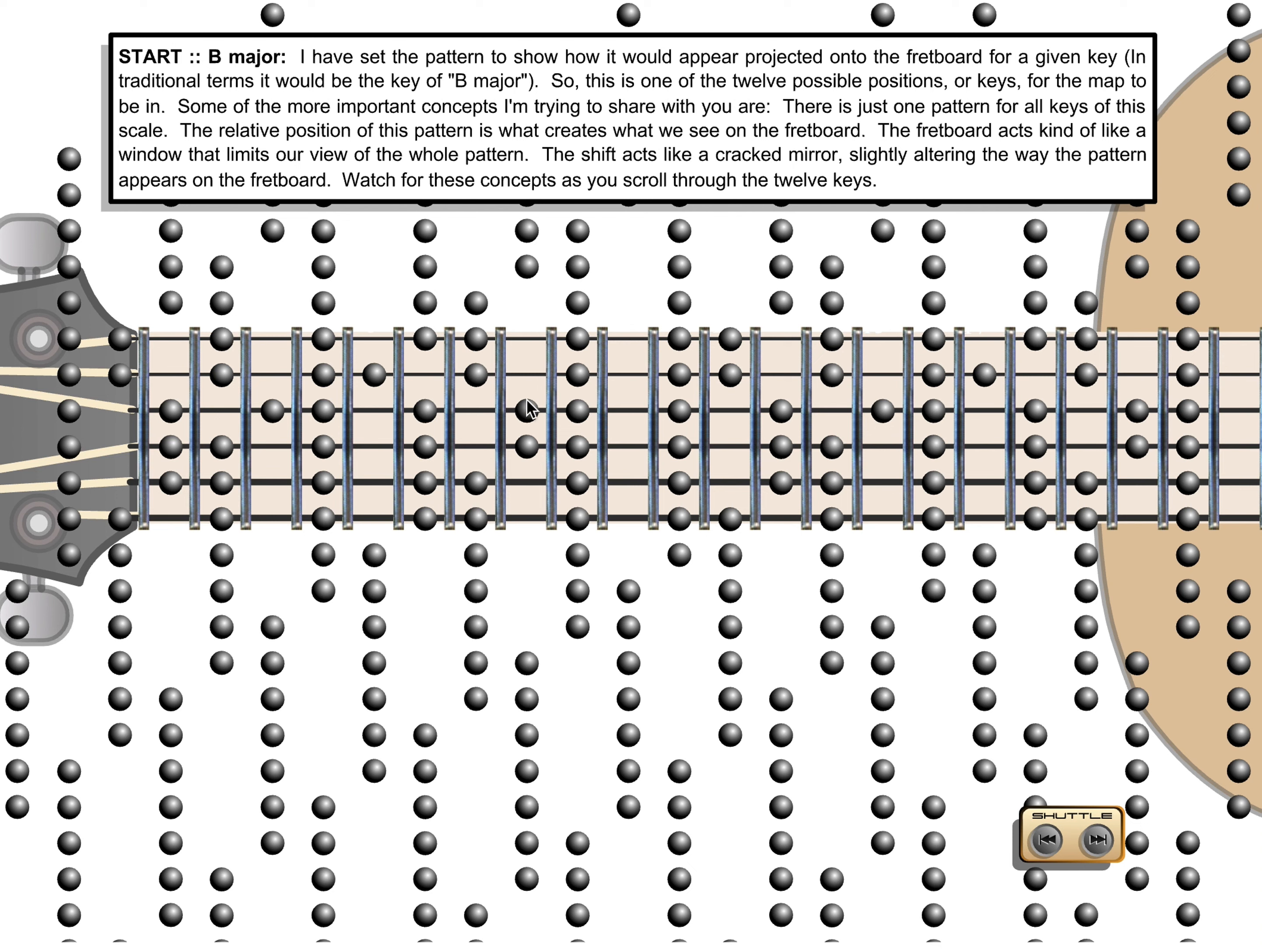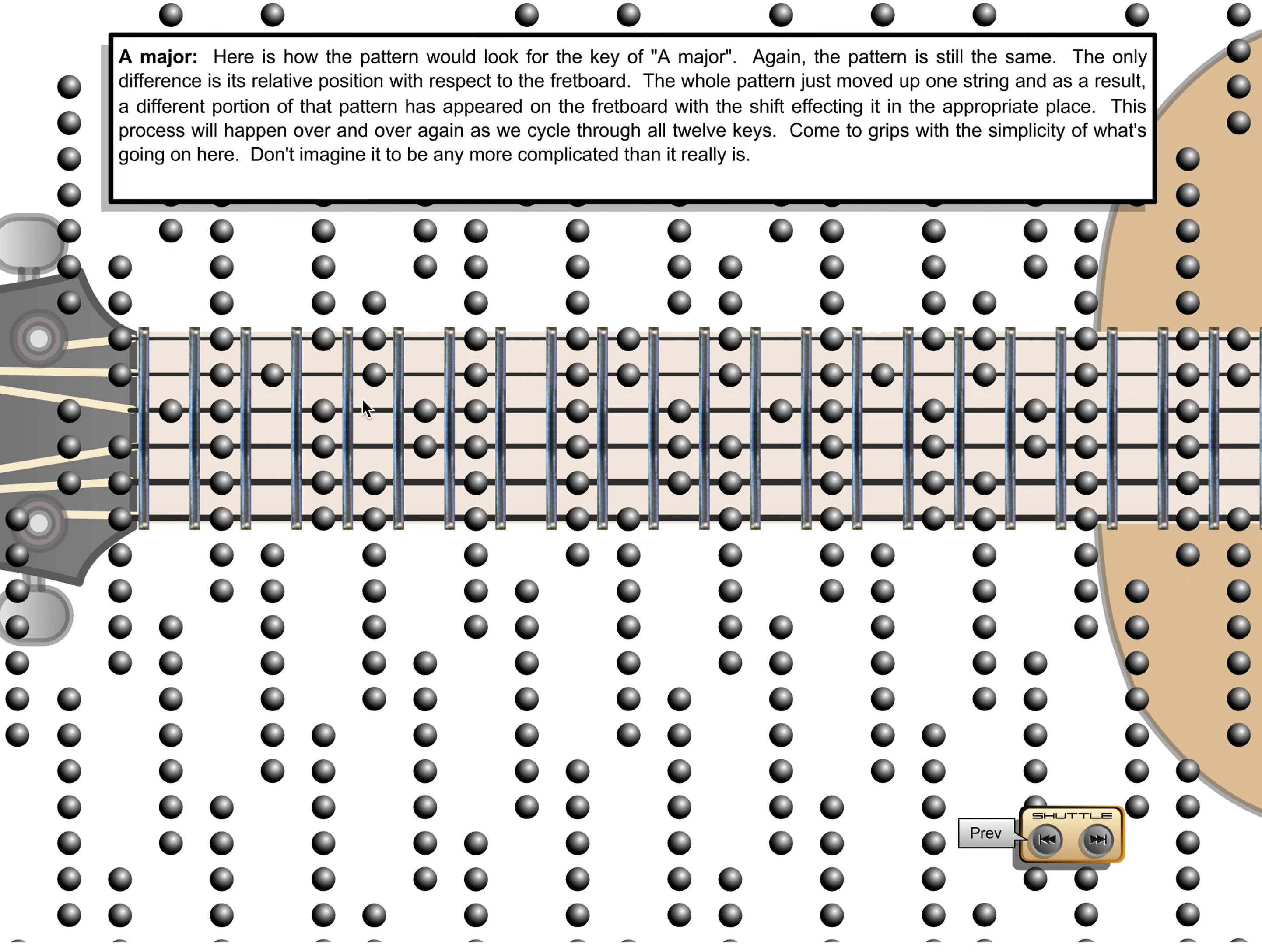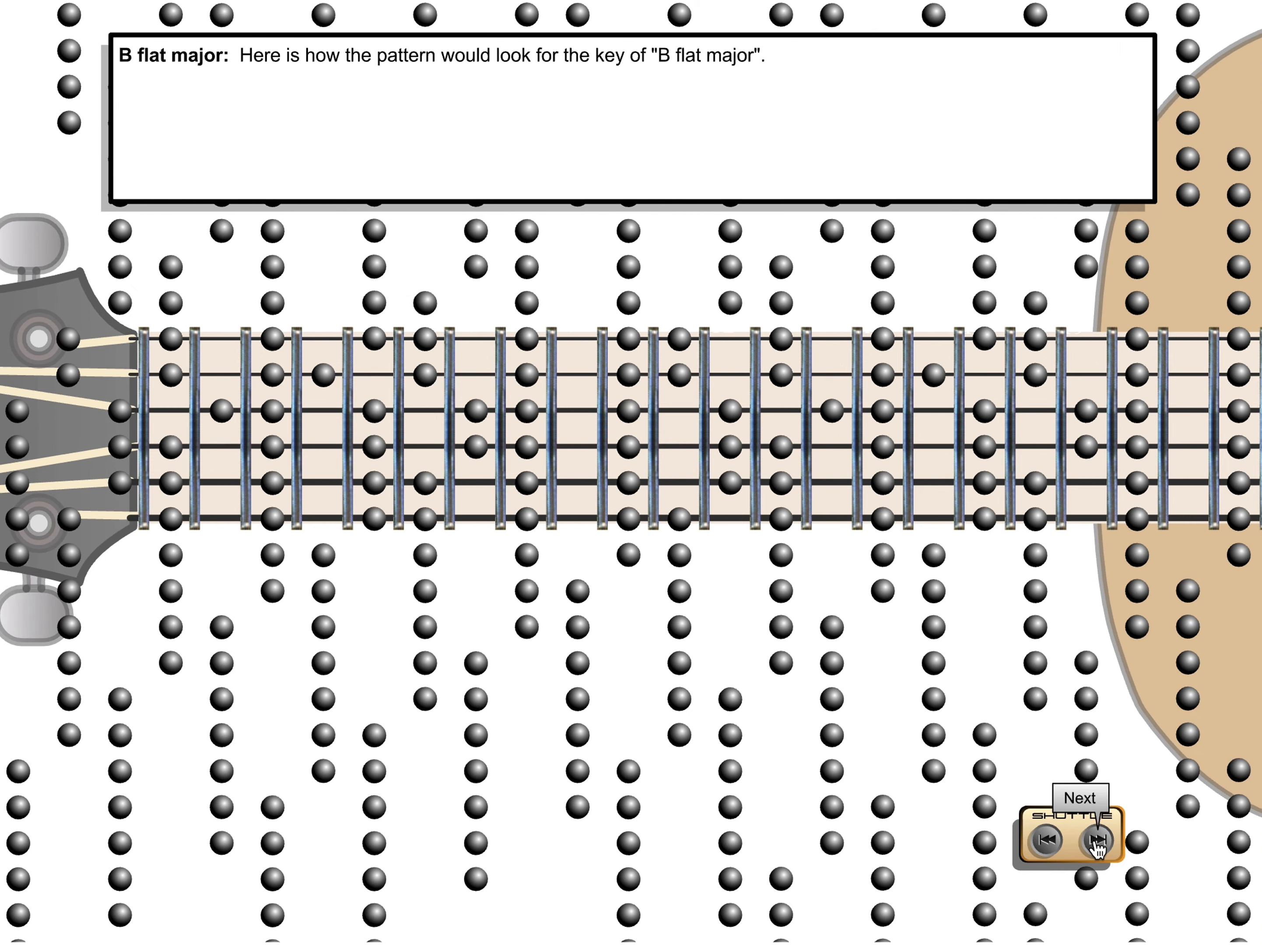Imagine that a projector is projecting the pattern and then somebody just moved the projector. So here's a different key, E major, A major. Notice if you click back and forth, it's like this little box is crossing over and therefore you'll have these two notes and those two notes and no longer have this note. So that's what changing keys is essentially happening there.